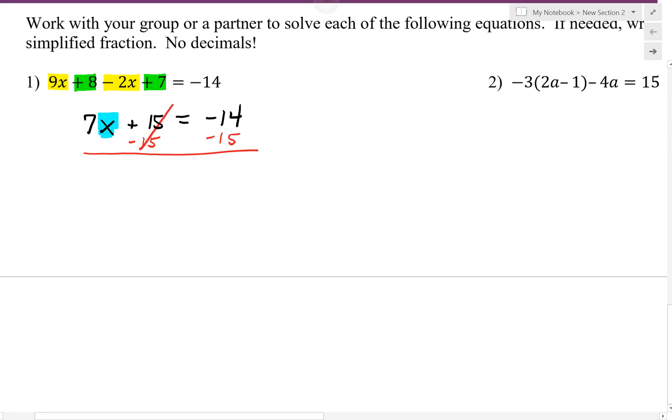Those cancel. Our left-hand side is now going to leave us with 7x. Equal sign comes down, and negative 14 minus 15 is negative 29.